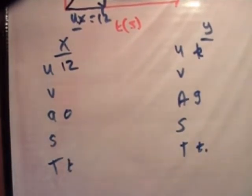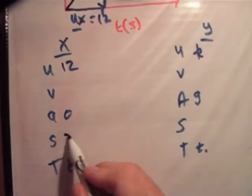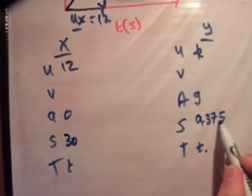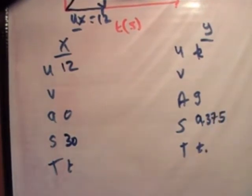Now we're told in the question that when the horizontal displacement is 30 meters, it is 9.375 meters above the plane. So when this is 30, this is 9.375. We're asked to find the value for k.